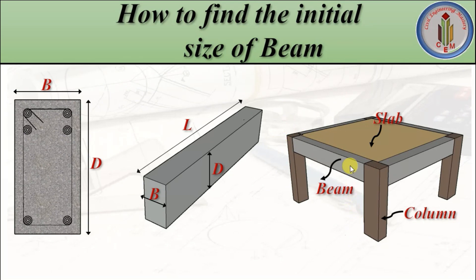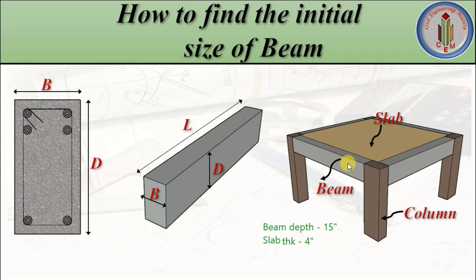Here is one important point: if someone says the beam depth is 15 inches, you may wonder whether that includes or excludes the slab thickness. The flat surface you can see — the slab thickness is included in the beam depth.